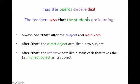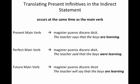Now this is a present active infinitive, and there are many other types. The basic rule for a present infinitive is that it occurs at the same time as the main verb. So 'magister pueros discere dicit' — 'dicit' is present, so we translate 'discere' as present: 'The teacher says that the boys are learning.' If we change the main verb to perfect 'dixit,' the present infinitive now happens at the same time as a past verb: 'The teacher said that the boys were learning.' And with a future main verb 'dicet': 'The teacher will say that the boys are learning.'